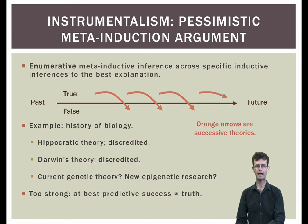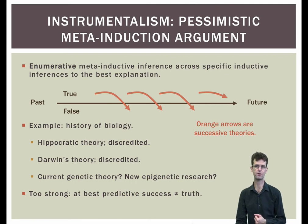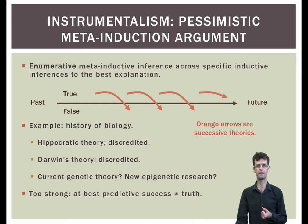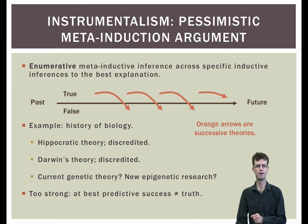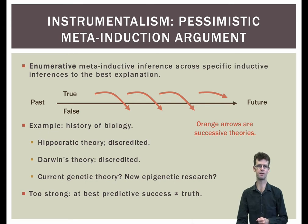Most notably, we have a challenge from something called the pessimistic meta-induction. The pessimistic meta-induction, or PMI, is an enumerative meta-inductive inference across previous specific inductive inferences. In spite of their predictive successes, most of our previous theories have turned out to be false. Therefore, by induction, our current predictively successful theories will also turn out to be false.